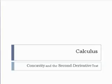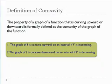We have studied where functions are increasing and decreasing, so now we're going to learn a new term. We're going to look at concavity of a graph. Concavity refers to the property of a function that is either curving upward or downward, and that is referred to as being concave up or concave down.